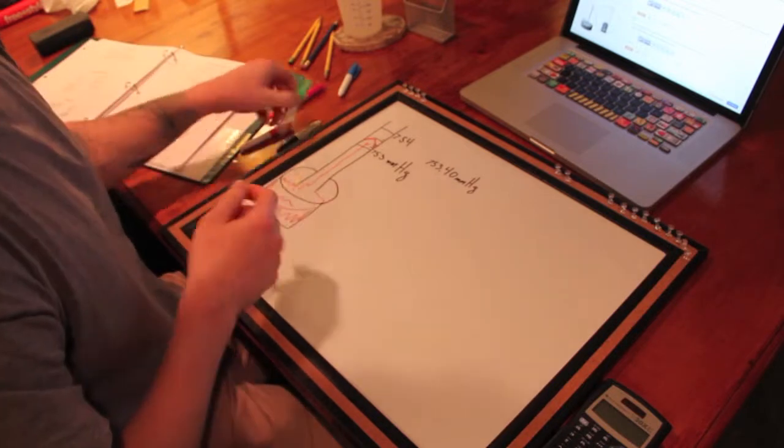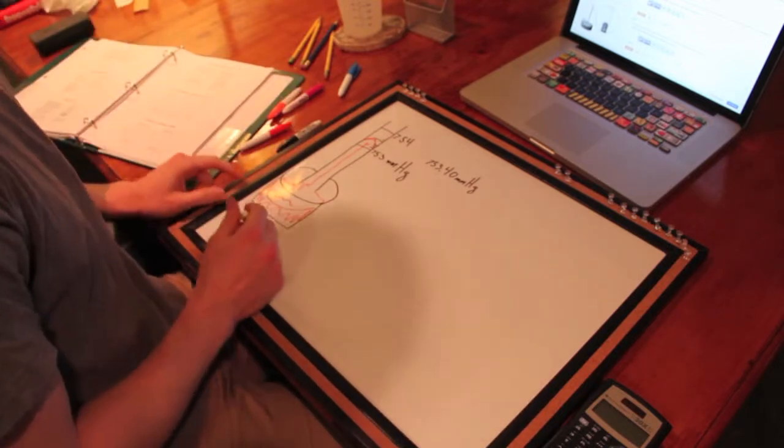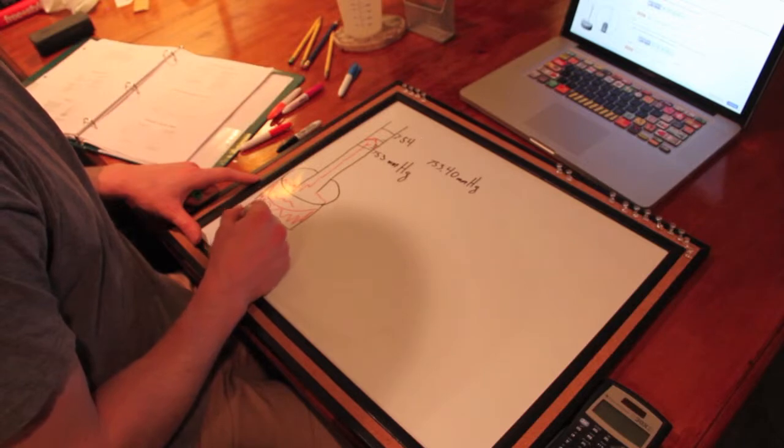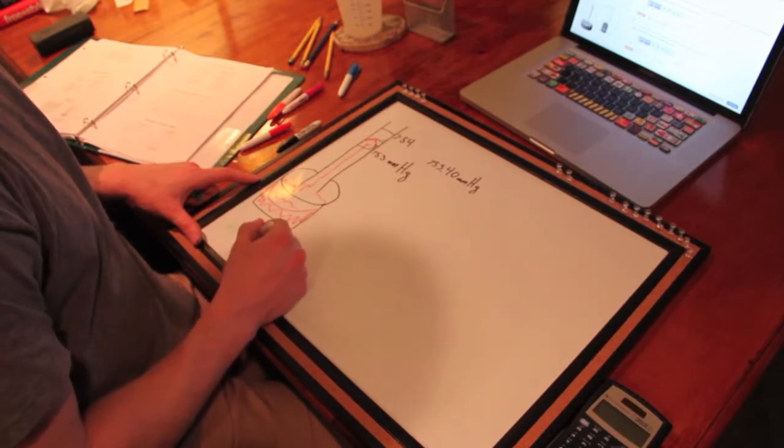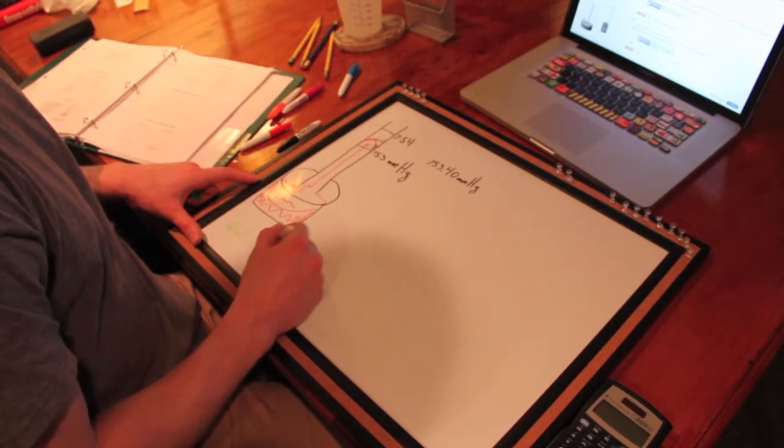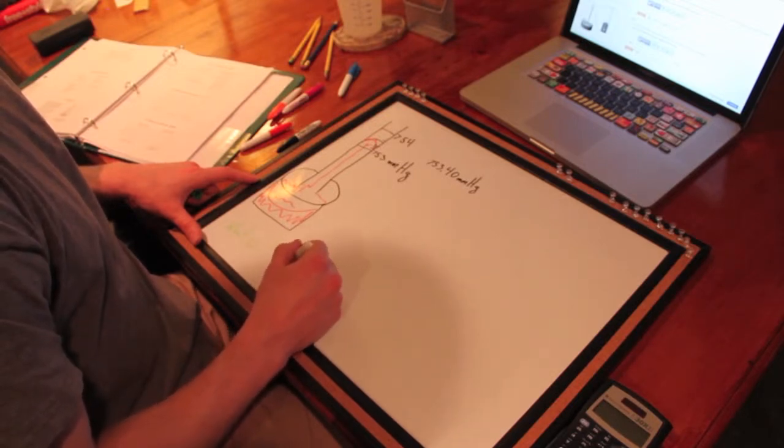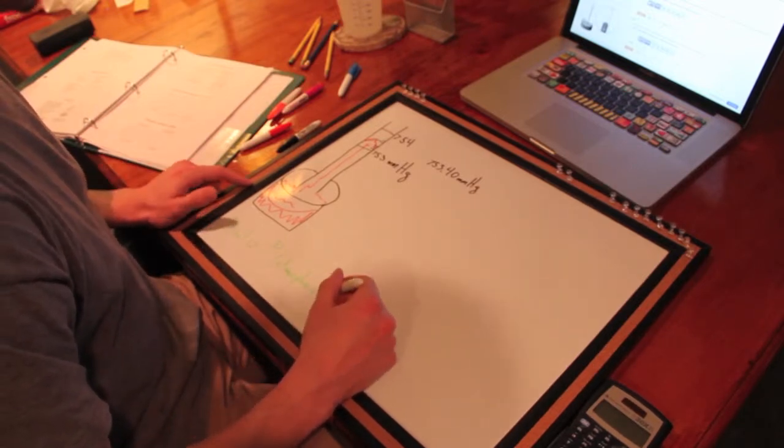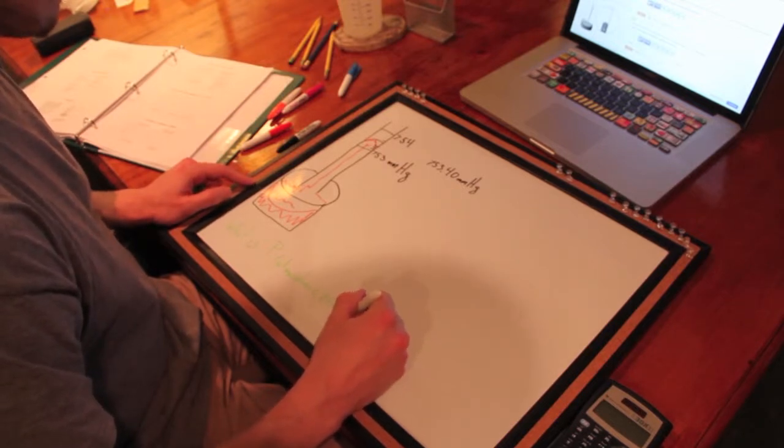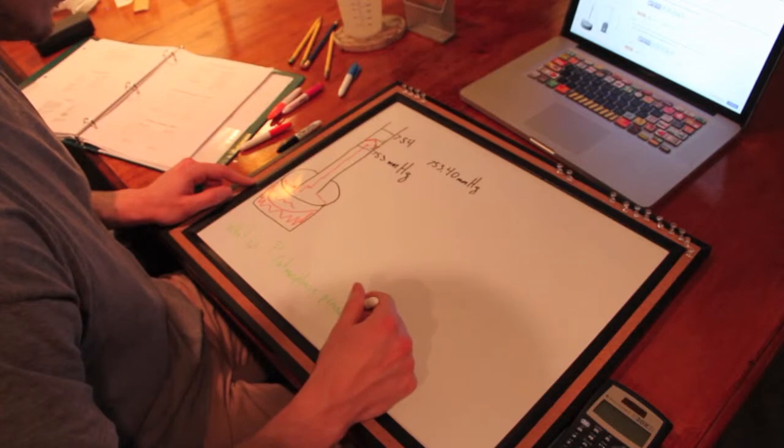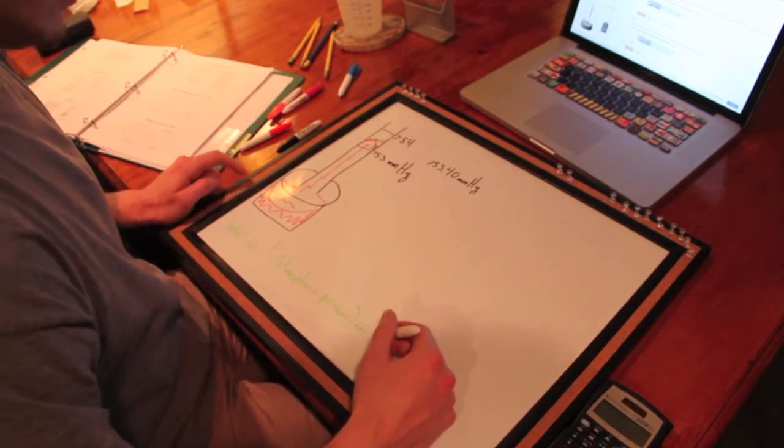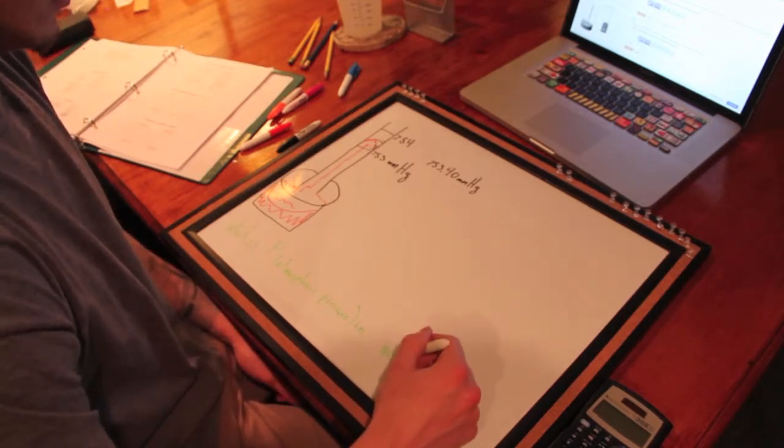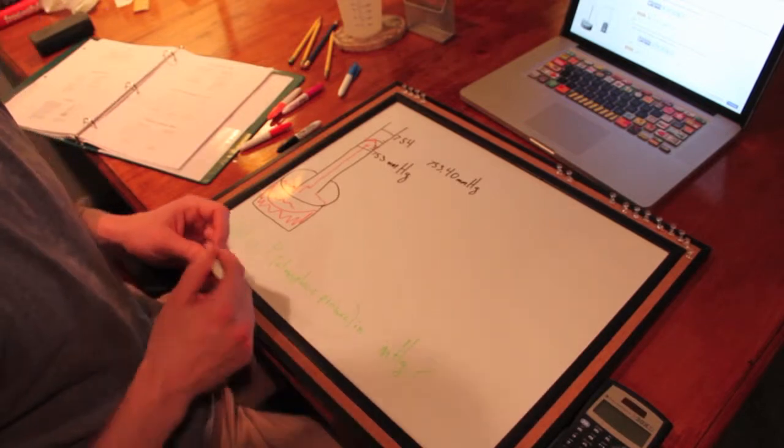I'll write the question in green because that's what we're going to find out. What is P atmospheric pressure in inches of mercury? So I'll just put inches Hg, question mark.